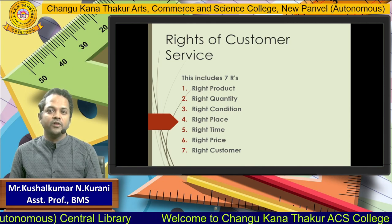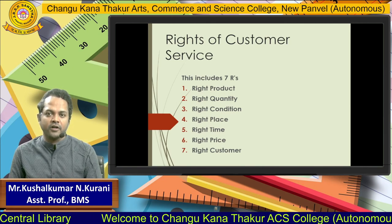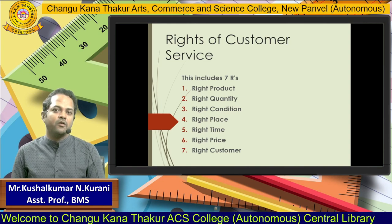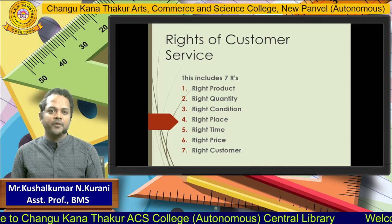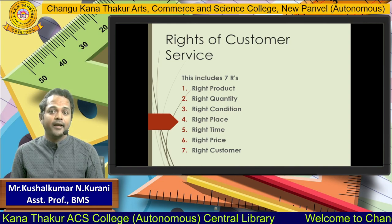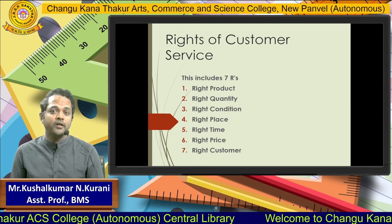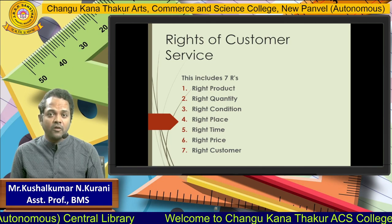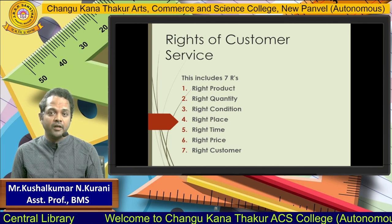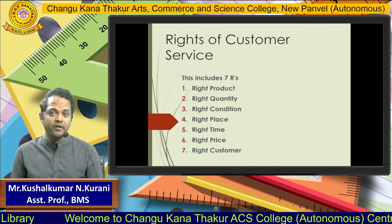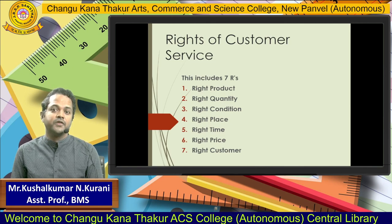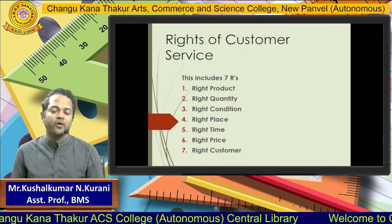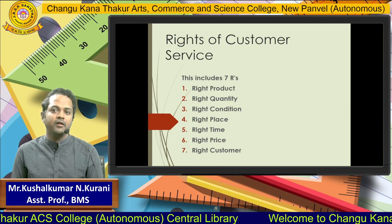There are totally seven rights. The first one is right product. This is very important from the customer's point of view. If a customer is ordering product A and the company is delivering product B, there is a gap in the product. One concept here is lead time — if the product is not delivered on time or a wrong product is delivered, it will have a very wrong impact on customer service. So the right product should be delivered to the customer at the right time.